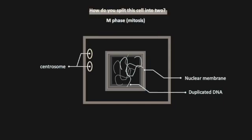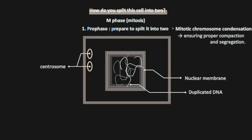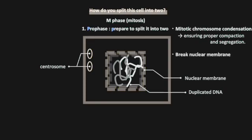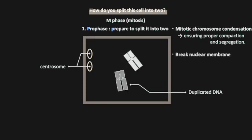First, we prepare to split it into two in prophase. Make chromosomes condensed. Break nuclear membrane. Prepare strings to pull chromosomes up.